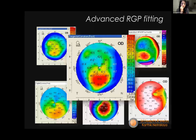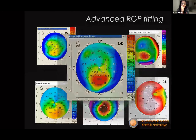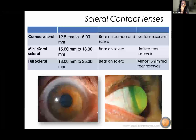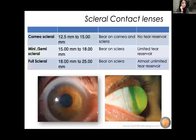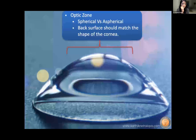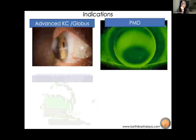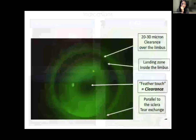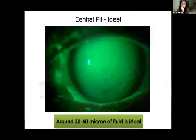For very irregular corneas — patients with INTACS or CLARC, post-corneal transplant, very steep or global corneas — corneal scleral, mini-scleral, and full scleral lenses work very well. These lenses have an optic zone, transitional zone, and landing zone. OCT gives an excellent modality for judging scleral fit, especially for assessing the haptic or central clearance.